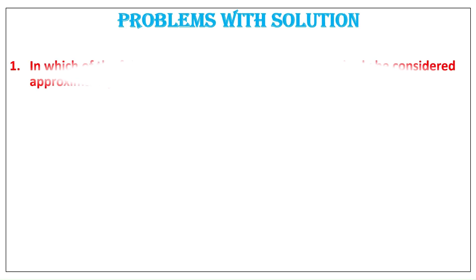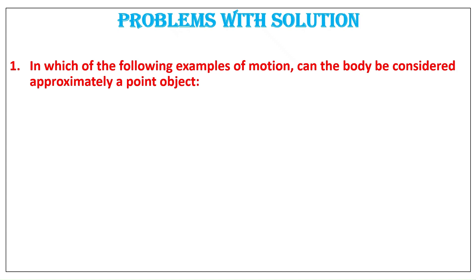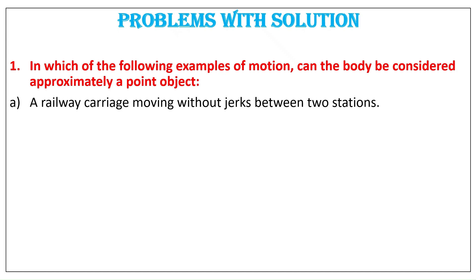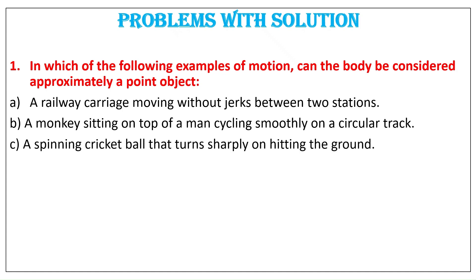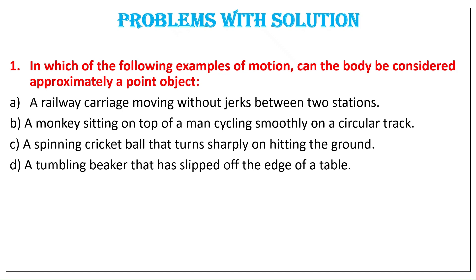Question 1. In which of the following examples of motion can the body be considered approximately a point object? A. A railway carriage moving without jerks between two stations. B. A monkey sitting on top of a man cycling smoothly on a circular track. C. A spinning cricket ball that turns sharply on hitting the ground. D. A tumbling beaker that has slipped off the edge of a table. Answer: A and B.